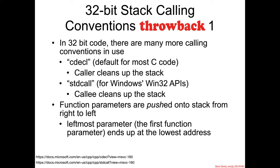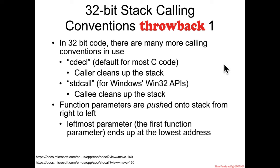In 32-bit systems, there were many more calling conventions in use. You can go see the Wikipedia page on calling conventions to see many of them. They all had a variety of names, things like Cdecl, or C declaration, which is the default used by most C code. In the 64-bit calling conventions, both the caller and callee are responsible for cleaning up the stack. Cdecl differs in that it's always the caller who cleans up — if you push some parameters onto the stack, you are also responsible for cleaning them up.